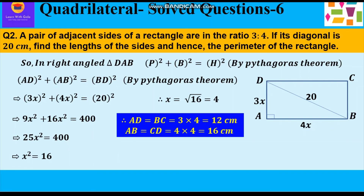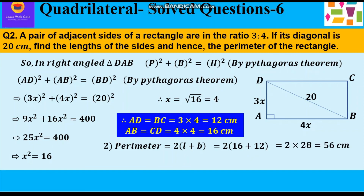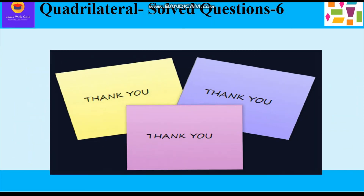In the rectangle, opposite sides are equal. So AD = BC = 3x = 3 × 4 = 12 cm, and AB = CD = 4x = 4 × 4 = 16 cm. The length and breadth of the rectangle are 16 cm and 12 cm respectively. The perimeter is 2(length + breadth) = 2(16 + 12) = 2 × 28 = 56 cm. Hope you have understood both questions. Please like and subscribe. Thank you, have a good day!